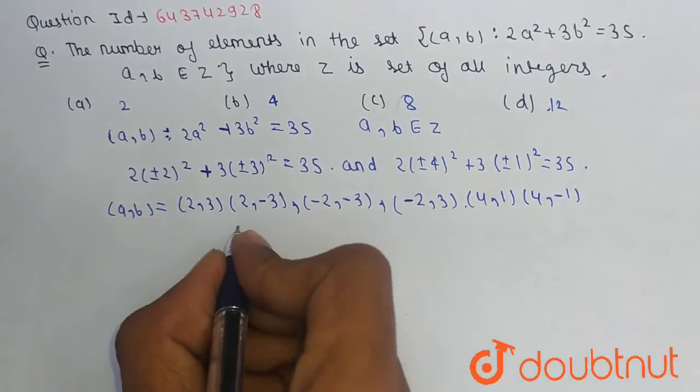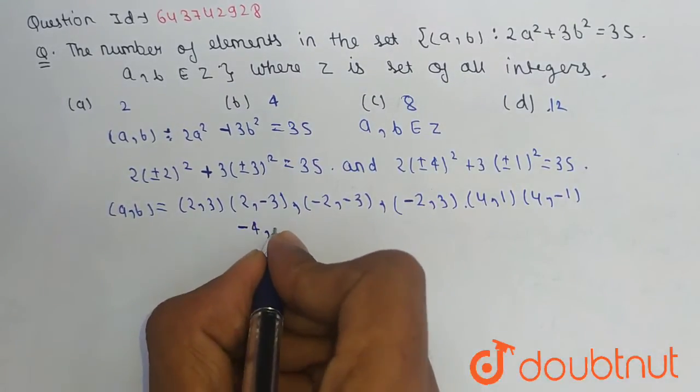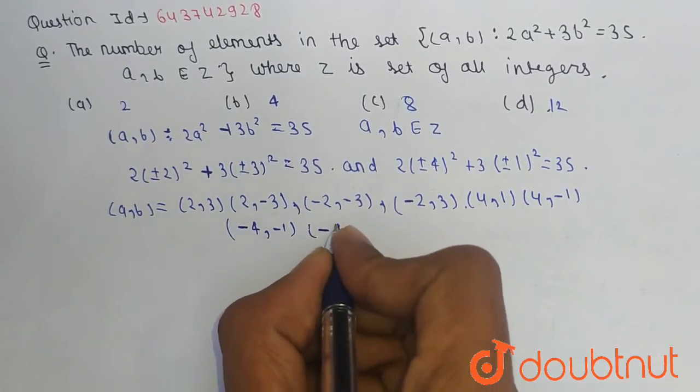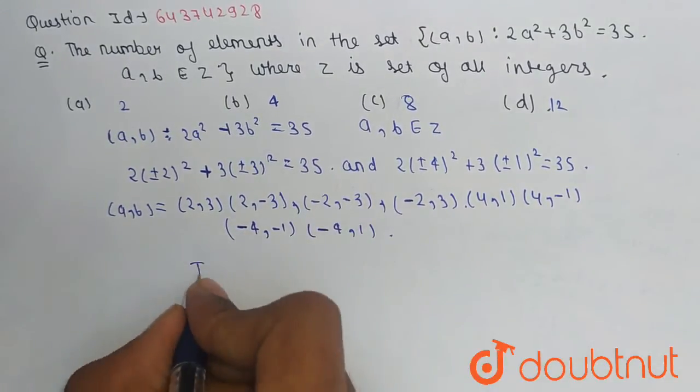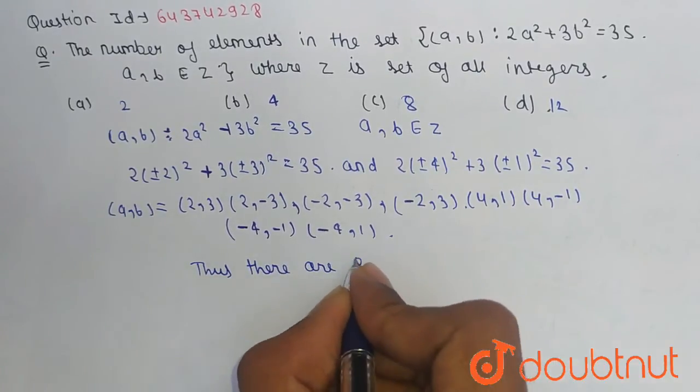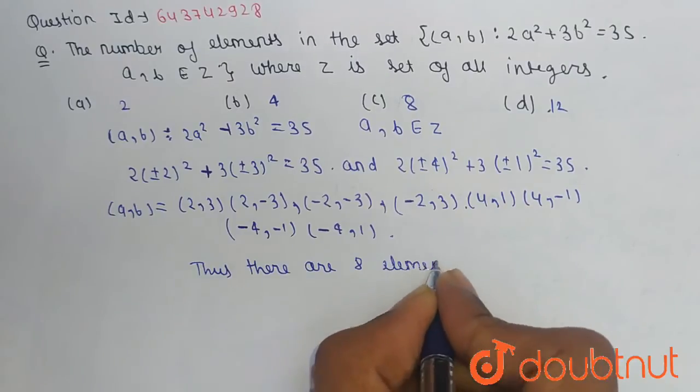and last one is (-4, 1). Thus there are 8 elements, so...